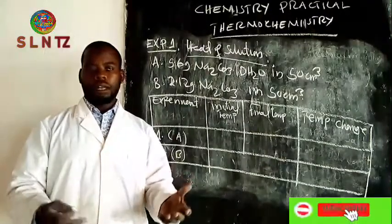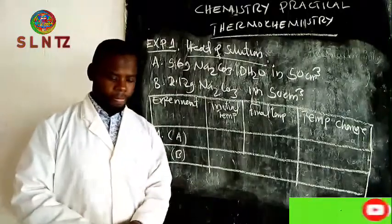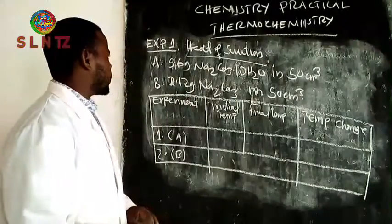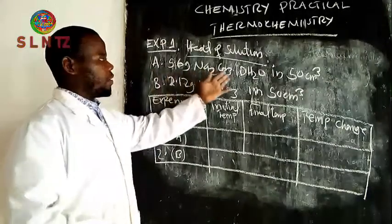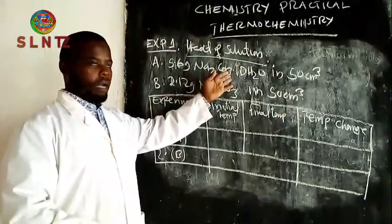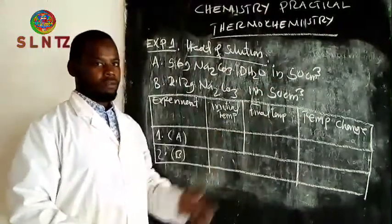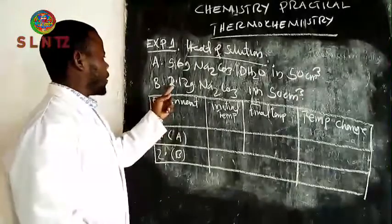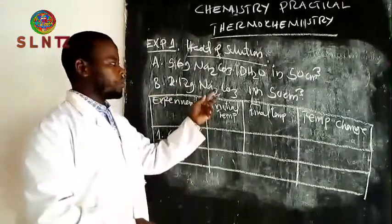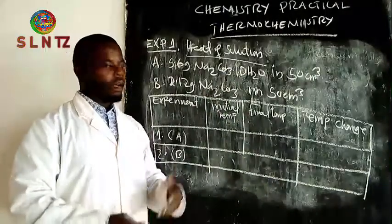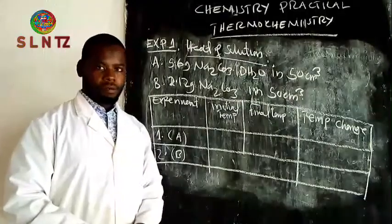You will see how to perform, how to calculate, and how to answer the questions. We have a mass of hydrated sodium carbonate we are going to dissolve in 50 milliliters of water, and we have 2.12 grams of sodium carbonate anhydrous in 50 milliliters of water.